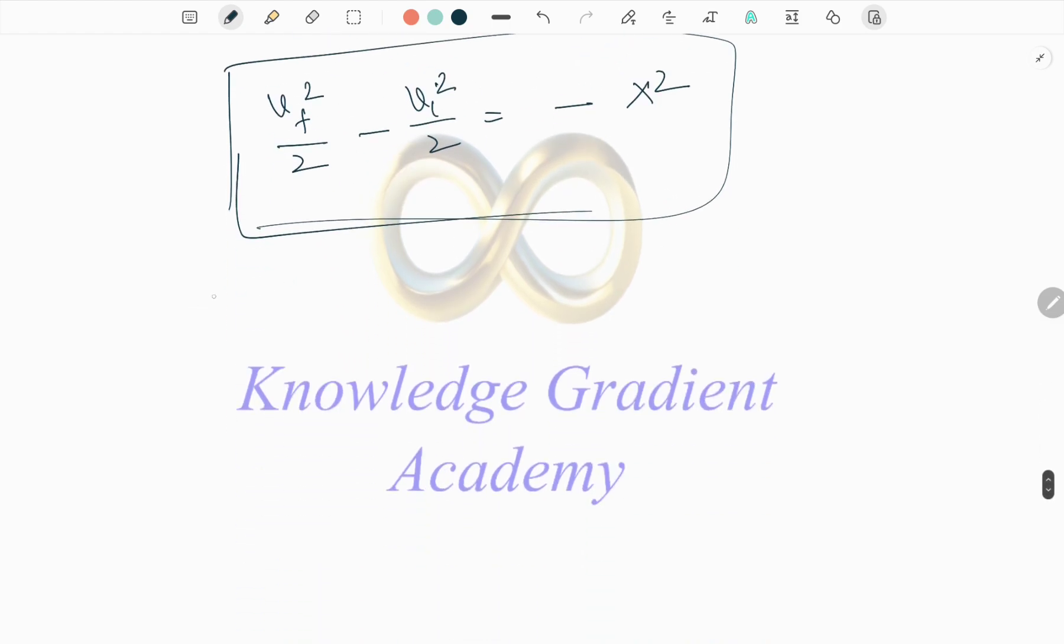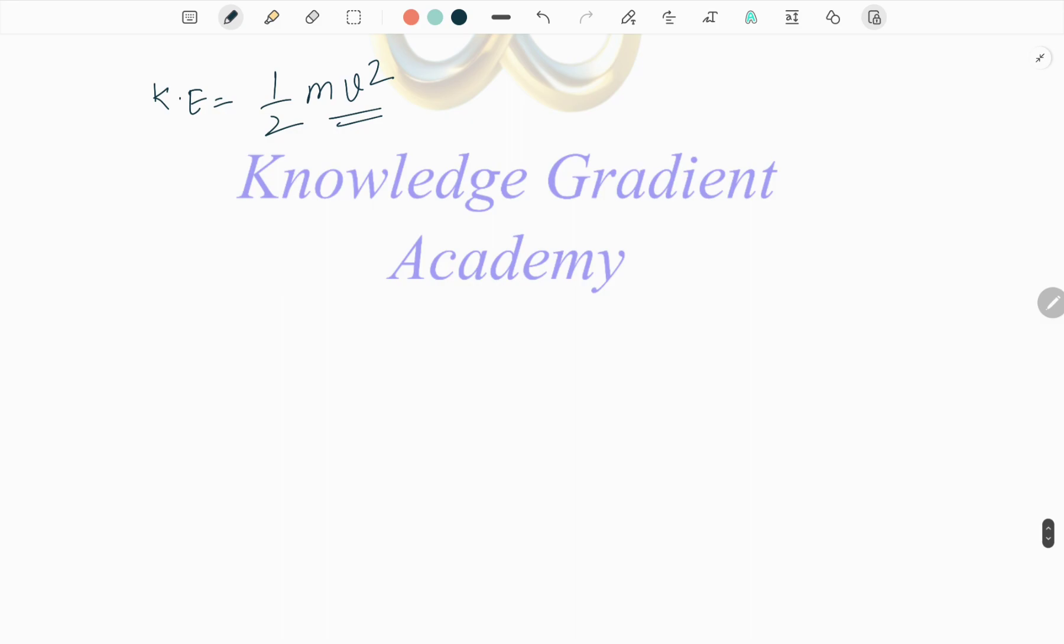What is the value of kinetic energy? Kinetic energy equals half m v squared. If we multiply our equation with mass, the complete equation with mass...